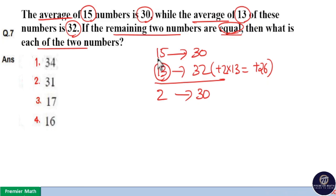But here question says average of 15 numbers is 30. So in order to balance this average of 15 numbers as 30, we have to subtract this increment in sum, 26, from the sum of two numbers.